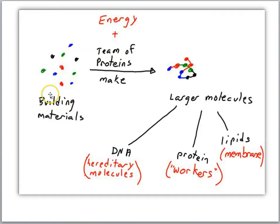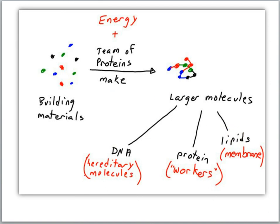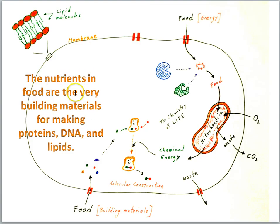We get building materials in our food — nutrients like amino acids, the building blocks of DNA, or the building blocks of fats. We have teams of proteins plus the chemical energy in ATP molecules produced by mitochondria to build large important molecules that make up the cell, whether it's DNA, protein, or the lipids that make up the membrane. The nutrients in food are the very building materials for making proteins, DNA, and lipids. The energy to do that comes from mitochondria, and the energy from mitochondria ultimately comes from the food that was imported to the cell.